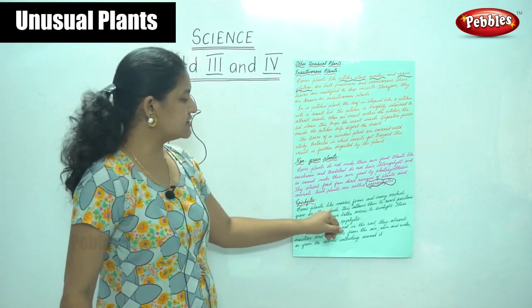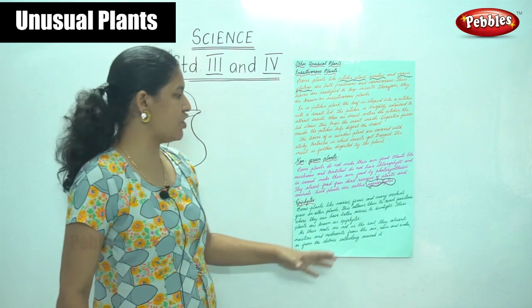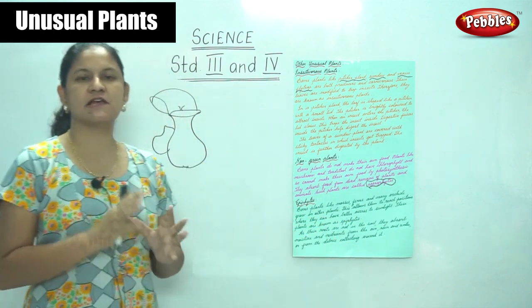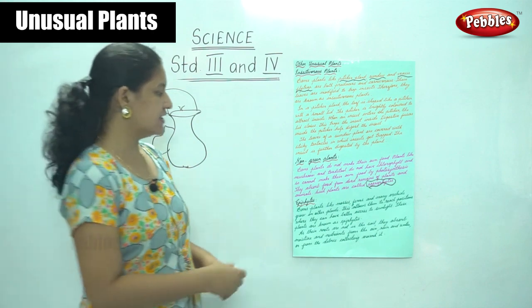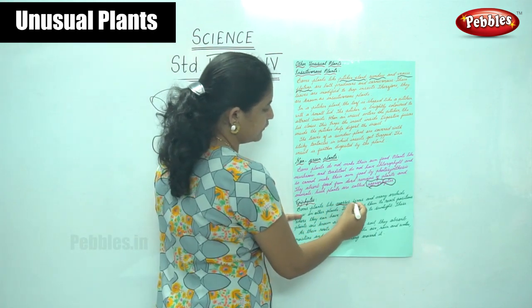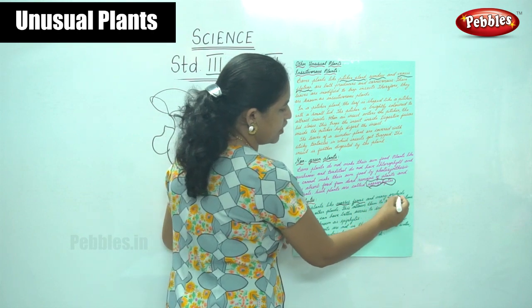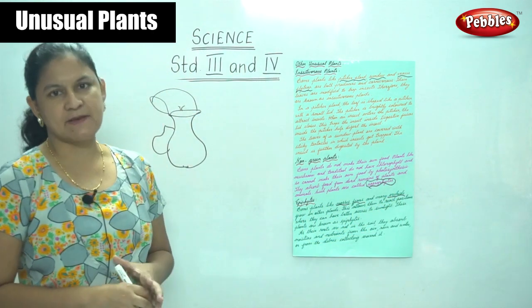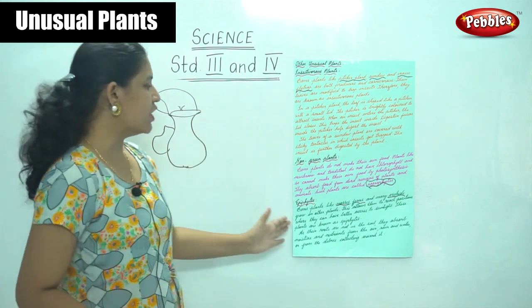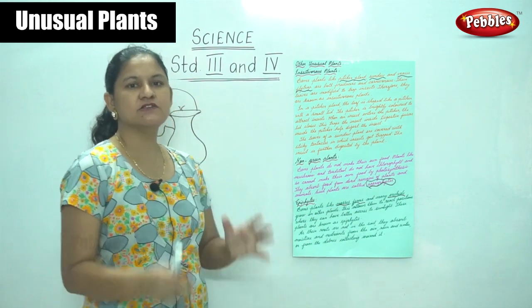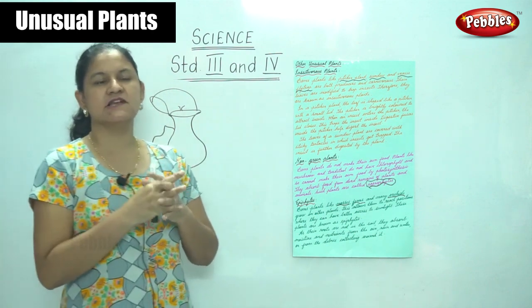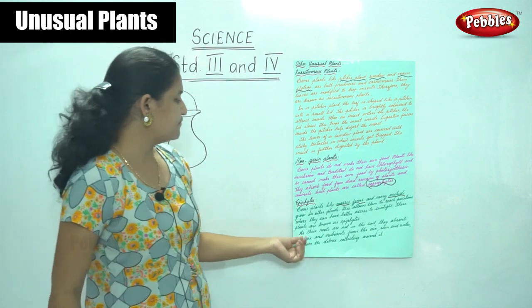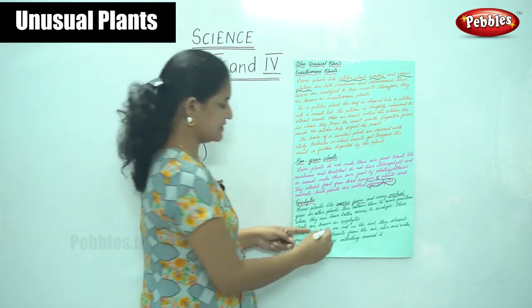Next are epiphytes. Some plants like mosses, ferns, and many orchids grow on other plants. This allows them to reach positions where they can have better access to sunlight. These plants are known as epiphytes.